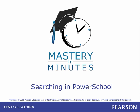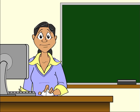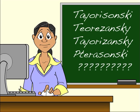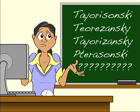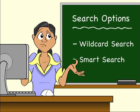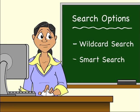Searching in PowerSchool. You need to update some information in PowerSchool for a student named Amanda Tarasansky, but you can't remember how to spell her last name. So how do you search for her student record? Fortunately, you have two options: you could use a wildcard search or a smart search.